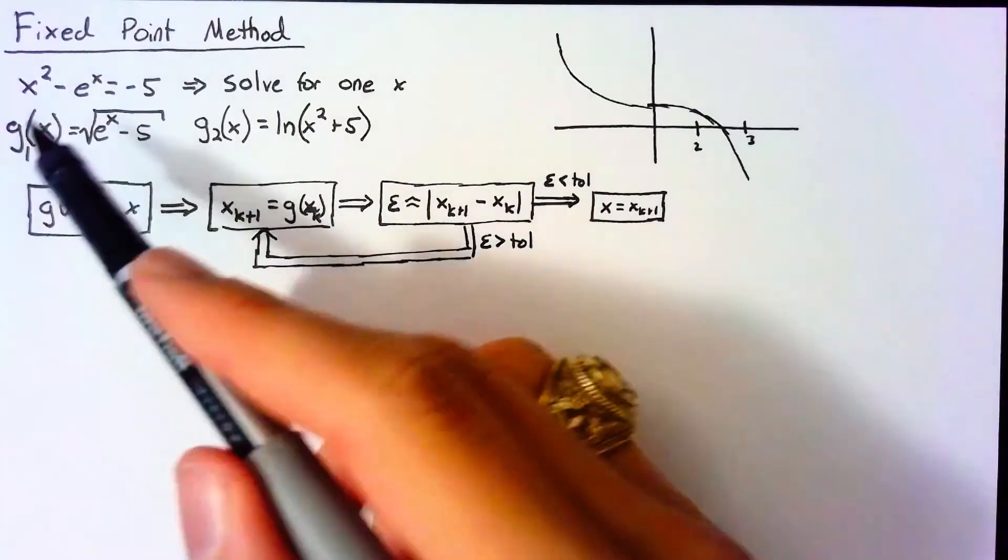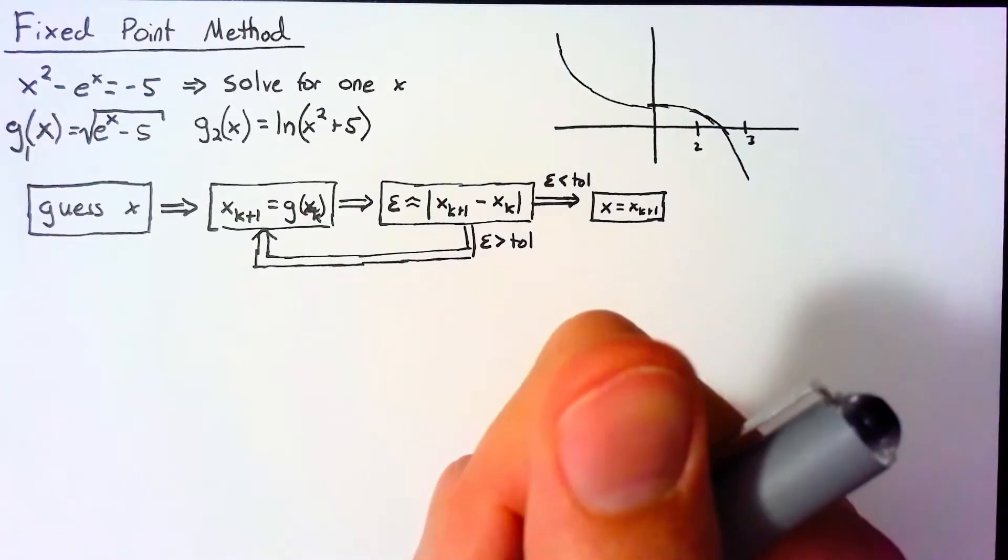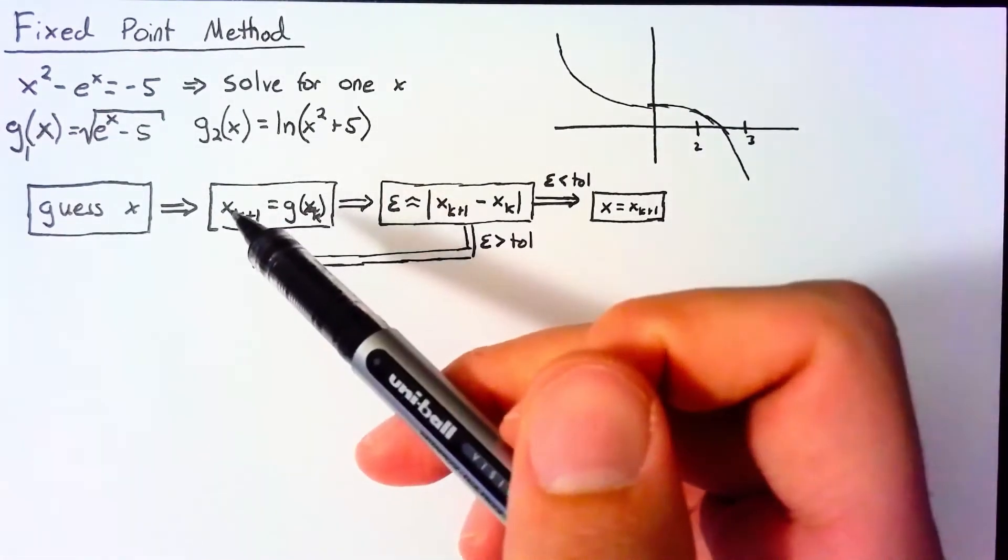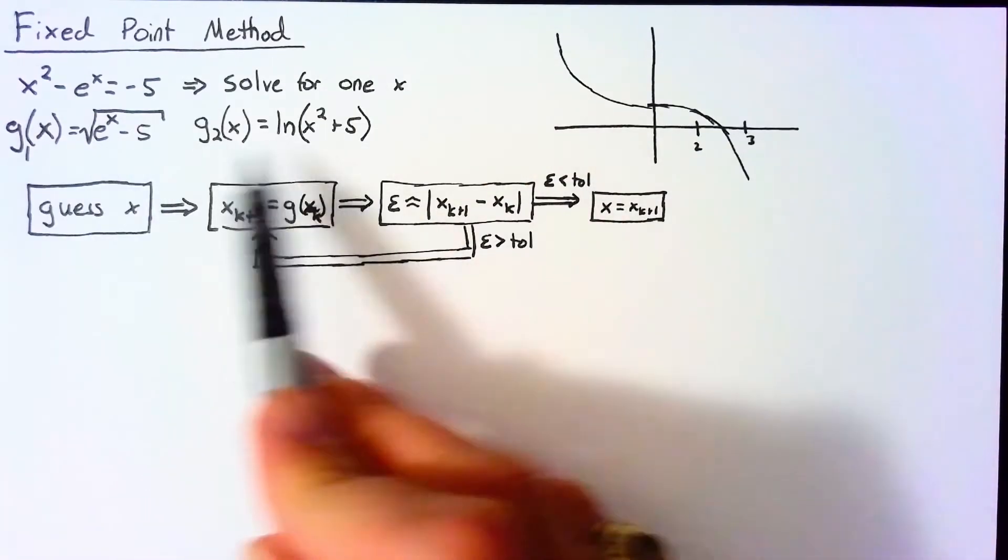So in reality, there are infinitely many ways to isolate a single x value. So we can't just say that any of these are going to work. And in fact, g₁ doesn't work nearly as well as we would hope. g₂ does work quite well.